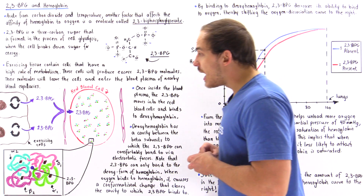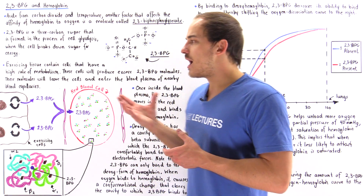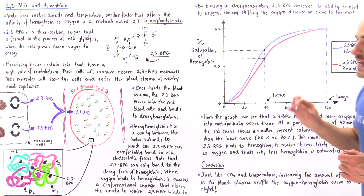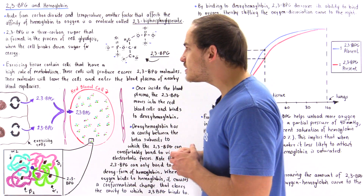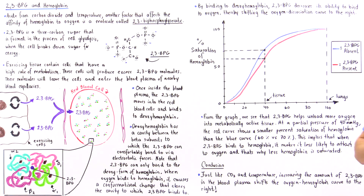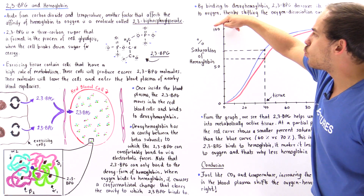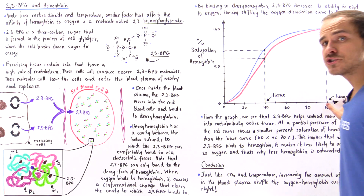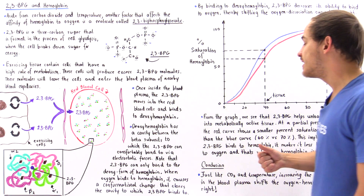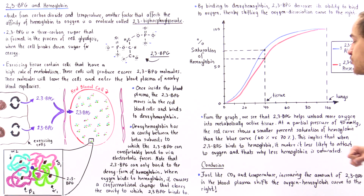Once 2,3-BPG binds to deoxyhemoglobin, it makes the protein much less likely to bind to other oxygen molecules. A high concentration of 2,3-BPG inside the red blood cells shifts the entire oxygen-hemoglobin dissociation curve to the right. The y-axis is percent saturation of hemoglobin (0–100%) and the x-axis is partial pressure of oxygen in millimeters of mercury.